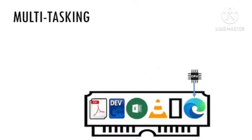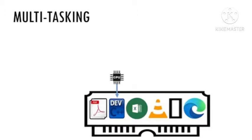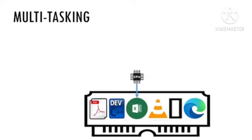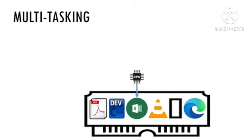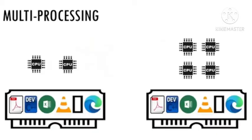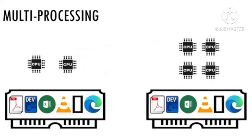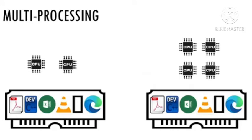Multitasking refers to the ability of an operating system to execute two or more tasks concurrently. In a multitasking environment, the user can open new applications without closing the previous ones, and information can be easily moved among a number of applications. Multiprocessing refers to the use of two or more CPUs to perform a coordinated task simultaneously.